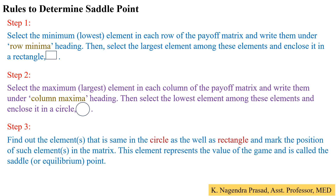Step 3: find the element that appears in both the circle and the rectangle, and mark the position of such an element in the matrix. This element represents the value of the game and is called the saddle point. So identify the common element in both the circle and the rectangle, mark its row and column position — that value represents the value of the game and the saddle point.